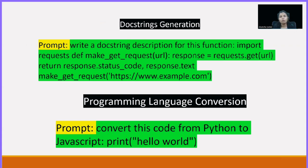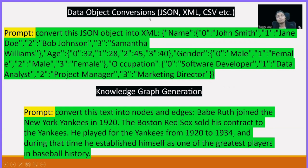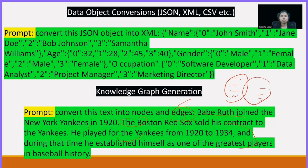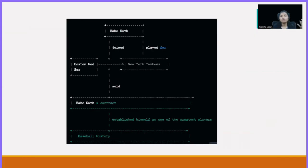Programming language conversion is also possible. If you have code in Python and want to convert it to JavaScript, just pass the code and say 'convert this code from Python to JavaScript.' Data object conversion is also possible — for example, 'convert this JSON object into XML.' Knowledge graph generation is also supported: it takes the entire sentence and converts it into nodes and edges. If knowledge graphs are not relevant to you, you can skip to the next topic.